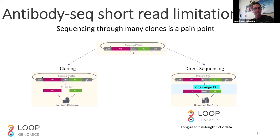One problem we're solving within antibody engineering is how to sequence full-length antibodies — linking heavy and light chains in high throughput. Within the context of display technologies, if you want to pair heavy and light chains using a phage display library, you would typically have to go through a cloning phase, cloning anywhere between hundreds to thousands of phage isolates. For each clone, you'd do sample preps separately in order to link the heavy and light chains using a short-read sequencer. You can't do that without going through the bottleneck of cloning because short reads are just too short to span both heavy and light chains on a single read.